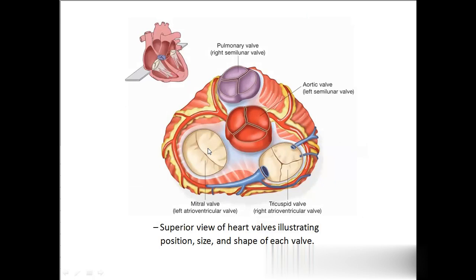This is actually the transverse section of the heart. In this picture you can see the coronary artery. Even the heart, being an organ, needs blood supply — from the aorta we get these arteries. And these are the coronary veins, which drain the blood into the right atrium.